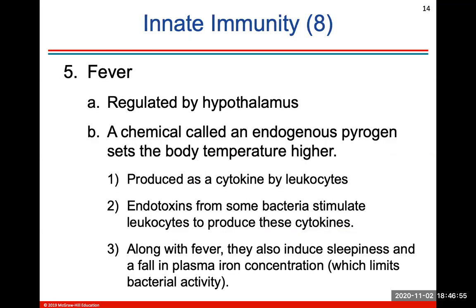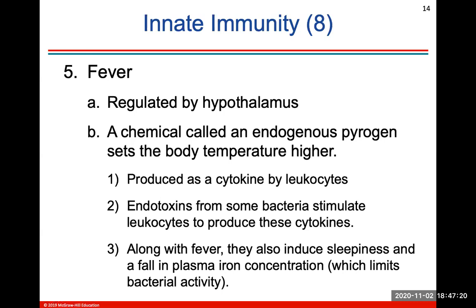Fever is regulated by your hypothalamus area in the brain. A chemical called an endogenous pyrogen will set the body temperature higher. This produces endotoxins from some bacteria, which will stimulate leukocytes to produce cytokines. Along with fever, these also induce sleepiness and a fall in plasma iron concentration, which will limit bacterial activity.